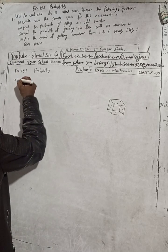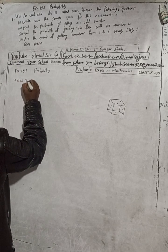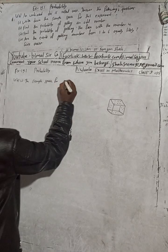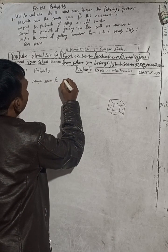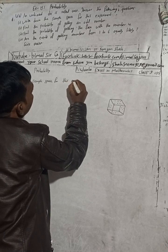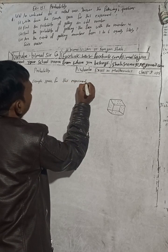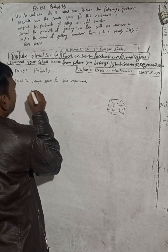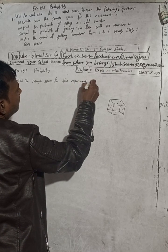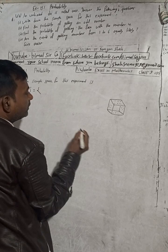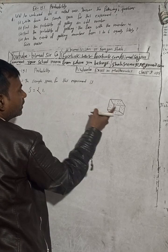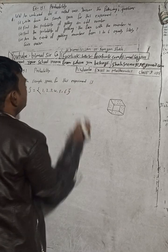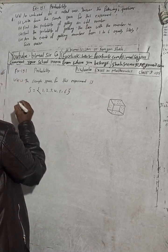For part one, the sample space for this experiment is S = {1, 2, 3, 4, 5, 6}. This is the sample space.